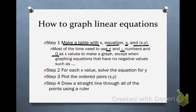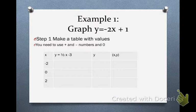Step two. For each x value, you're going to solve the equation for y. Step three, you're going to plot the ordered pairs. Step four, you're going to draw a straight line through all of the points using a ruler. So if you don't have a ruler, you need to get one. So again, write down these notes, and I'm going to give you examples on how to do this step-by-step.